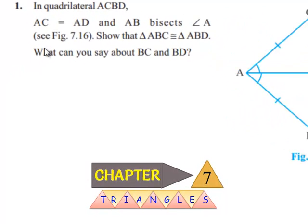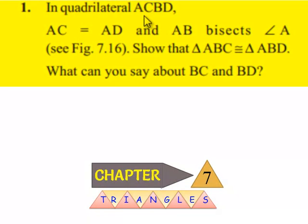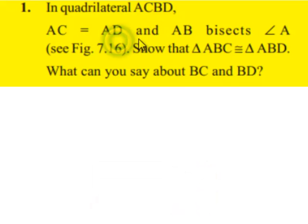Coming to the first problem, in quadrilateral ACBD, AC is equal to AD and AB bisects angle A. Show that triangle ABC is congruent to triangle ABD, and what can you say about BC and BD?